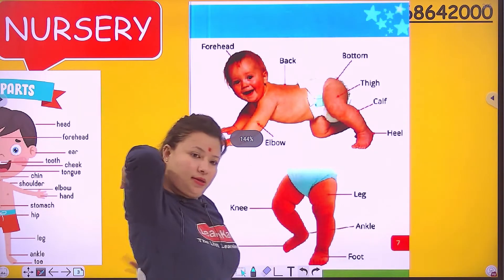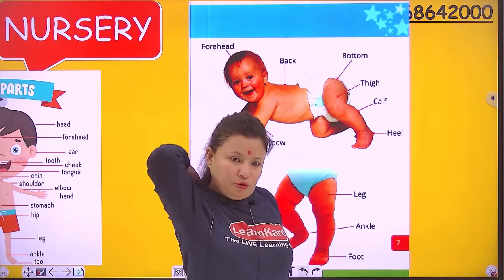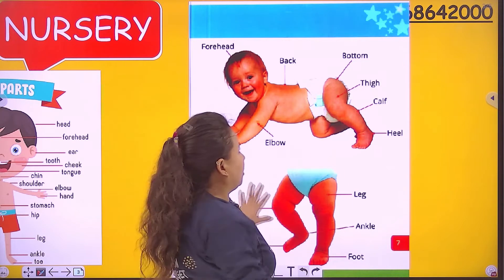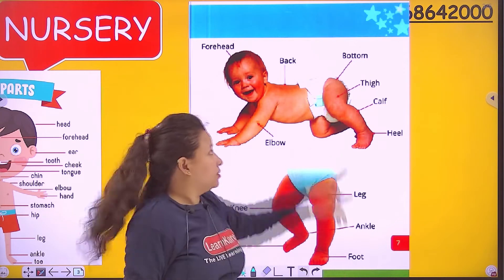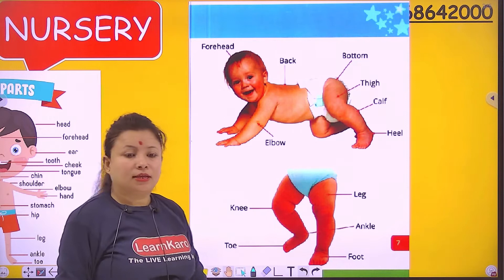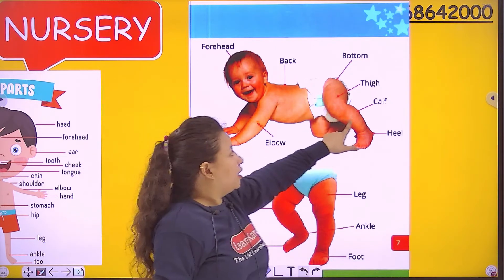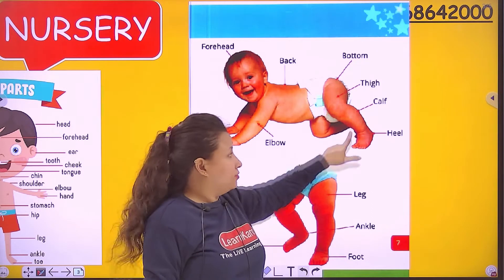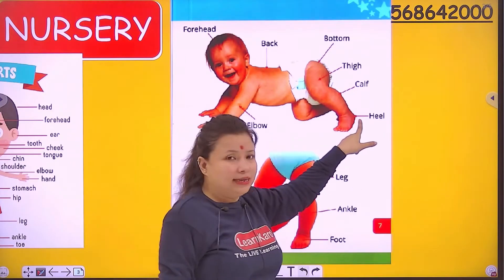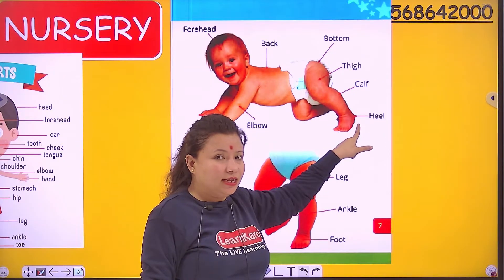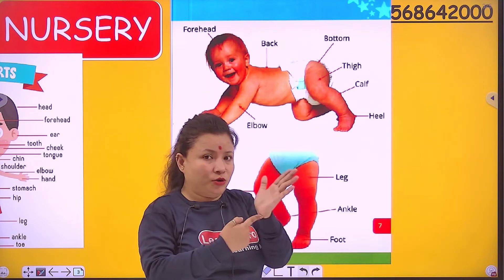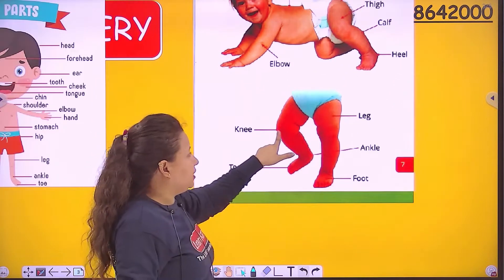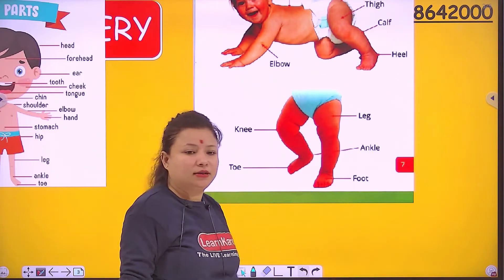Back. Back. Tap on your back. Bottom. Thigh. Thigh. Calf. Calf. Heel. Heel. The heel is the last point of your foot. Heel. Knee. Knee. Bend your knee.